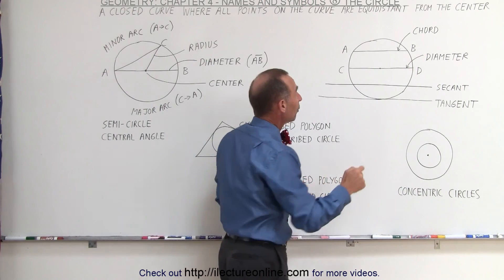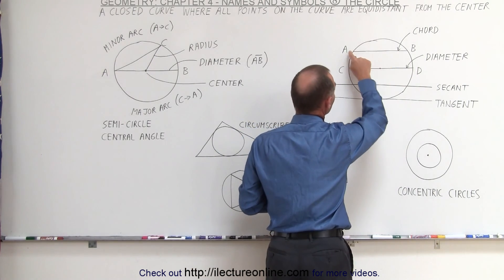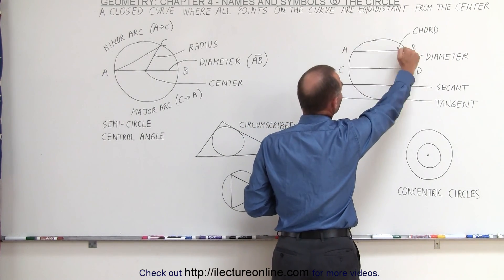But if we draw a line where it does not go to the center, like here from A to B, that's called a chord.